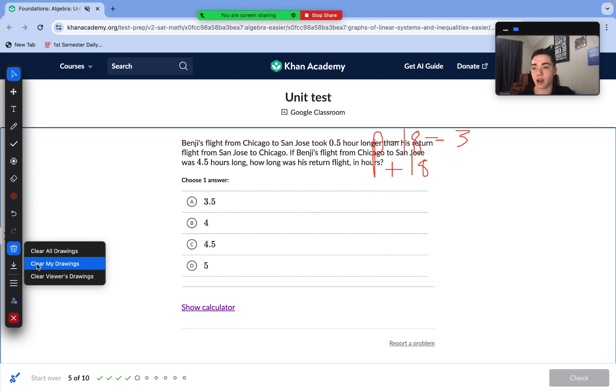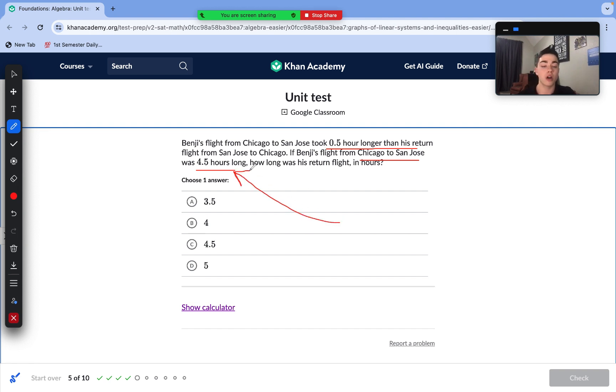Moving to question number 5 here. Benji's flight from Chicago to San Jose took half an hour longer than his return flight from San Jose to Chicago. If Benji's flight from Chicago to San Jose was four and a half hours long, how long was his return flight? So we know that this flight, the Chicago to San Jose, took 0.5 hours longer. So 4.5 is 0.5 hours longer, which means to find his return flight, all we need to do is subtract 0.5. 4.5 minus 0.5 is just 4. So answer choice B is correct.